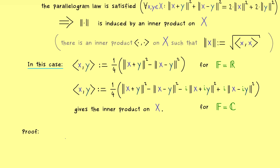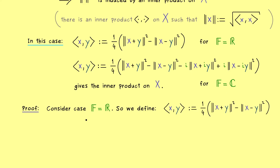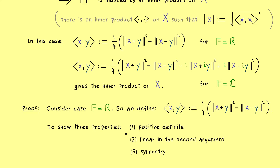But I can already tell you, this is not so simple as it might look. And for that reason I will not write down the full proof, but I will give you all the ideas. And moreover I will also only consider the real case, because the complex case is more or less the same, just with two additional terms. Hence for the rest of the video, when we write the pointed brackets, we mean this combination for the norm. And now in order to show that this defines an inner product, we have to show three properties: positive definiteness, linearity in the second argument, and symmetry.